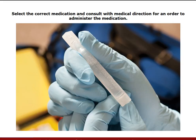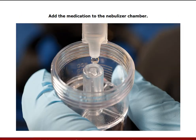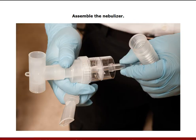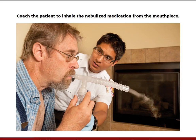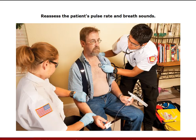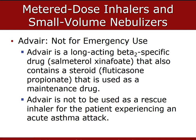For nebulizers, confirm the five Rs and note that the typical adult dose for albuterol via nebulizer is 5 milligrams. Place the medication in the nebulizer chamber, replace the top, attach the corrugated tubing, attach oxygen to the bottom, then attach the mouthpiece. Turn the oxygen up to 6 to 8 liters per minute on the regulator. Have the patient breathe in as deep as they can and exhale as long as they can. If they can't use the mouthpiece, attach a mask to the patient instead.